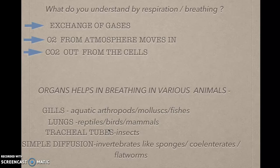There are various organs used as the respiratory system in various animals. In humans, lungs are used as the respiratory organ. Gills are used by aquatic arthropods, mollusks, and fishes. Lungs are used by reptiles, birds, and mammals. Tracheal tubes are used by insects. In invertebrates like sponges and cnidarians, they are simple organisms that use the diffusion process for the exchange of gases, as there is no complex organ present inside their body.